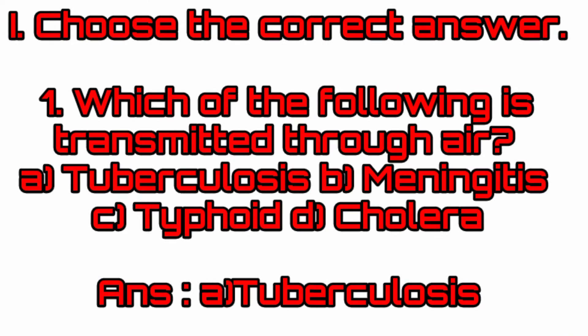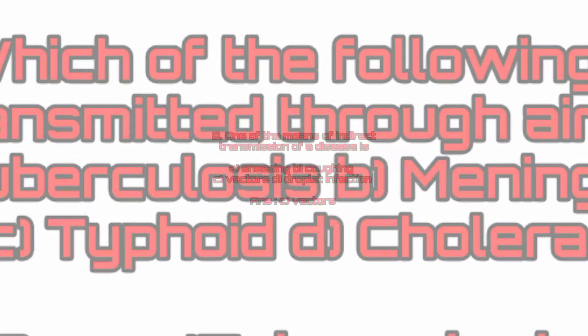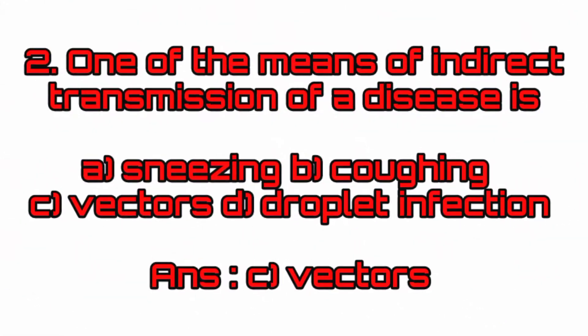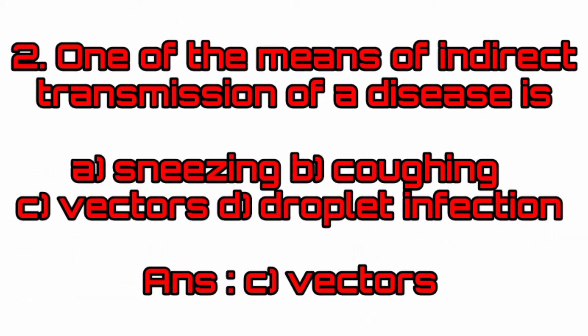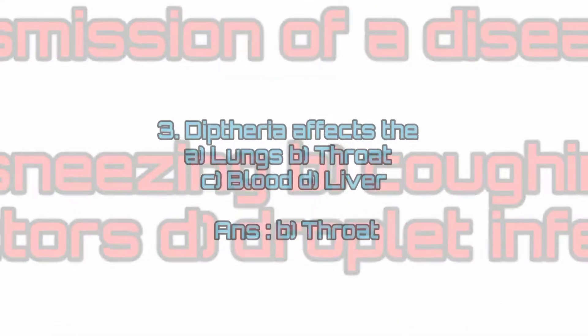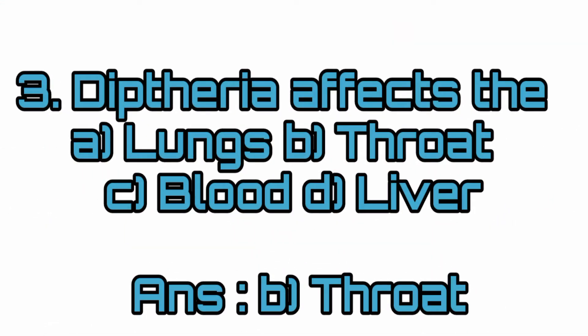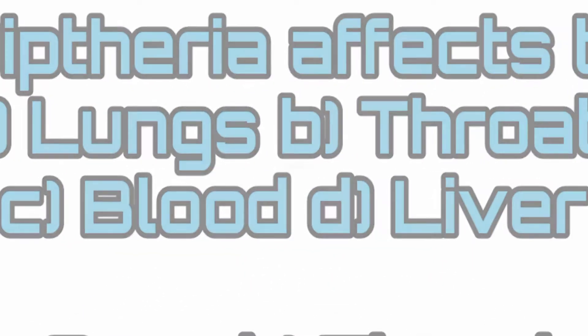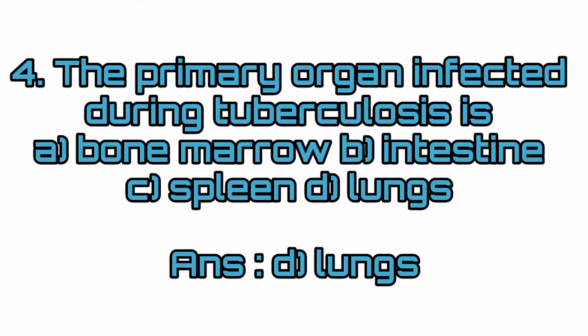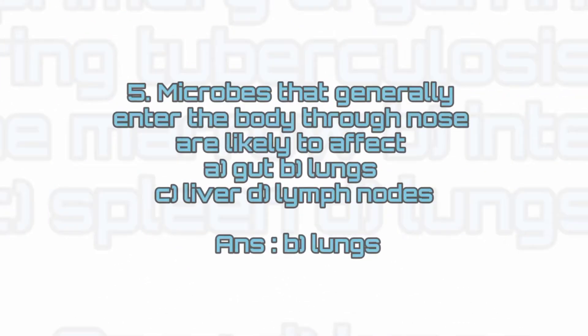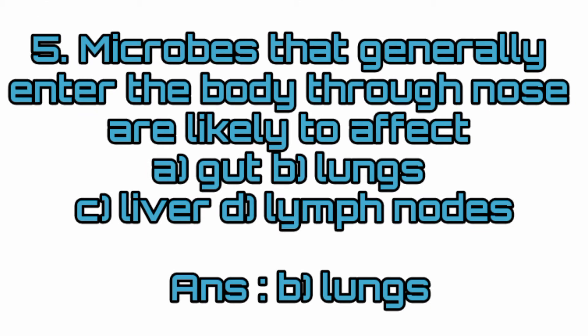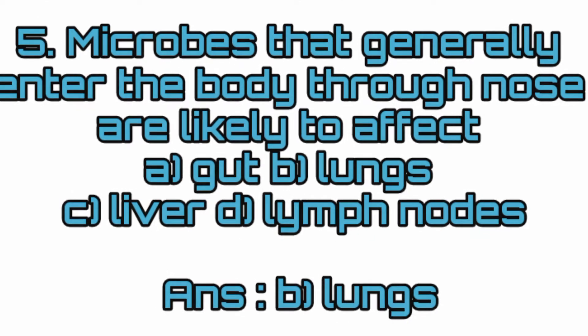Choose the correct answer. Which of the following is transmitted through air? Answer: Tuberculosis. One of the means of indirect transmission of a disease is vectors. Diphtheria affects the throat. The primary organ infected during tuberculosis is the lungs. Microbes that generally enter the body through the nose are likely to affect the lungs.